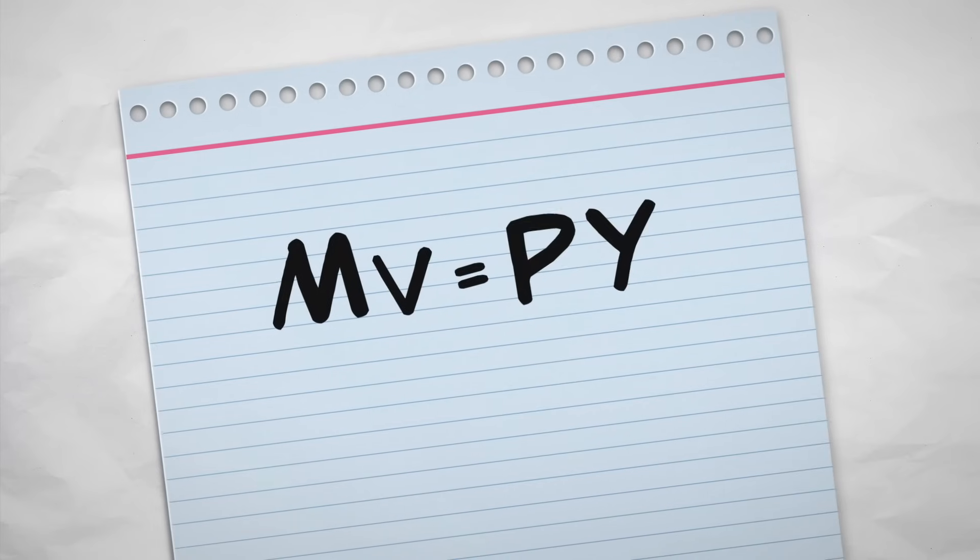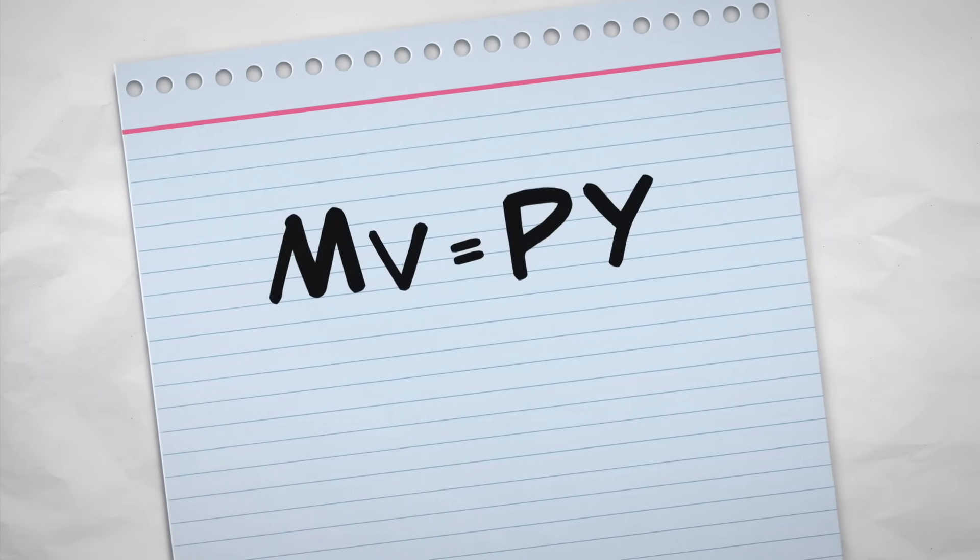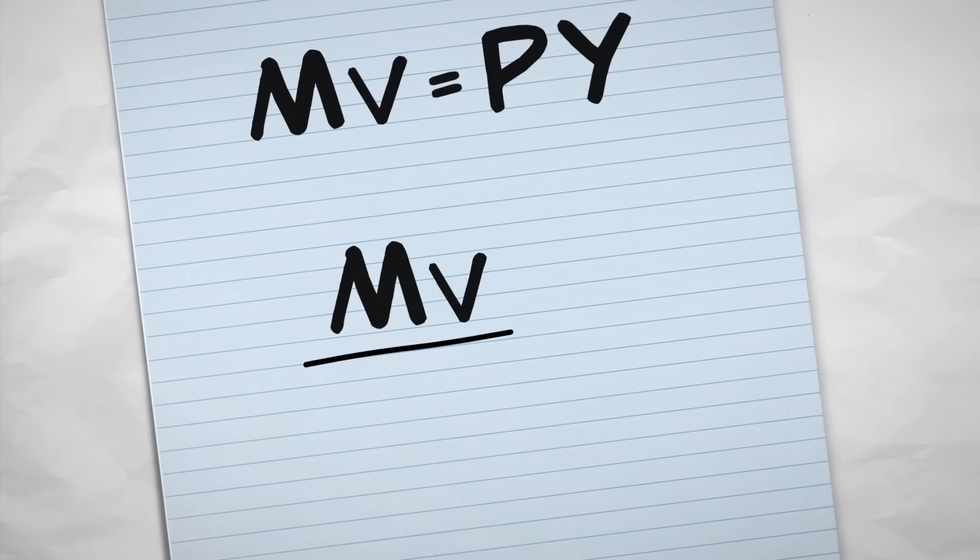Today, we're going to explain the primary cause of inflation, and we're going to do so using the quantity theory of money. Let's start by rewriting our equation slightly. We'll divide both sides by y, so we get this.